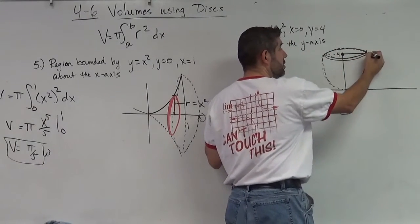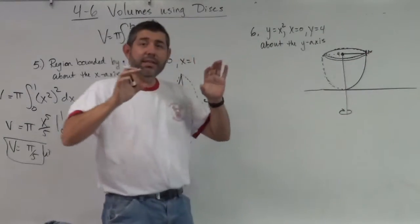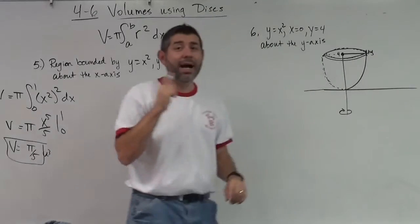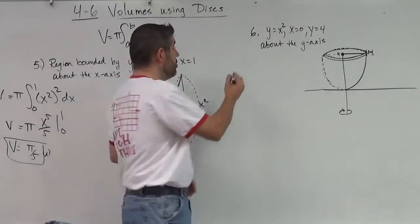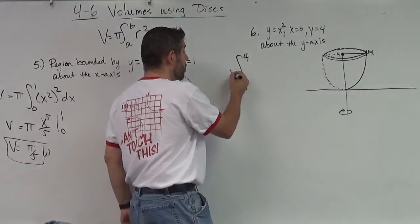With a thickness of dx. My radius is, I'm sorry, a thickness of dy, because we're going around the y-axis. I'm going to have to make my integral in terms of y. So zero to four, pi.